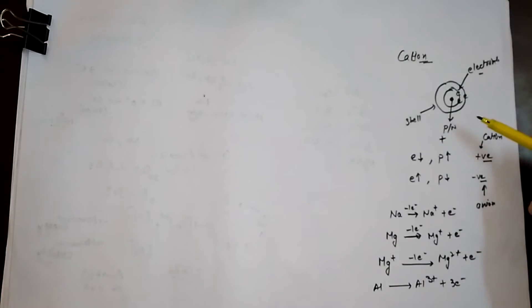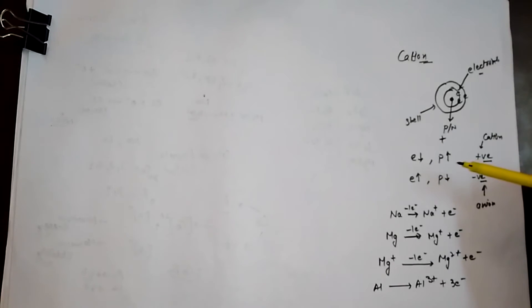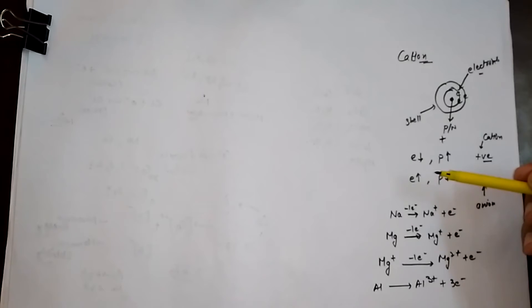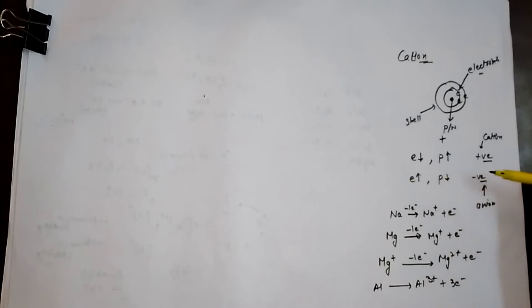Similarly, if an atom gains electrons, it will have more electrons as compared to the protons. When we count, the number of electrons becomes more as compared to the number of protons. So the number of protons becomes decreased and the electrons increase in counting. With more electrons, the atom gets a negative charge — this is called an anion.